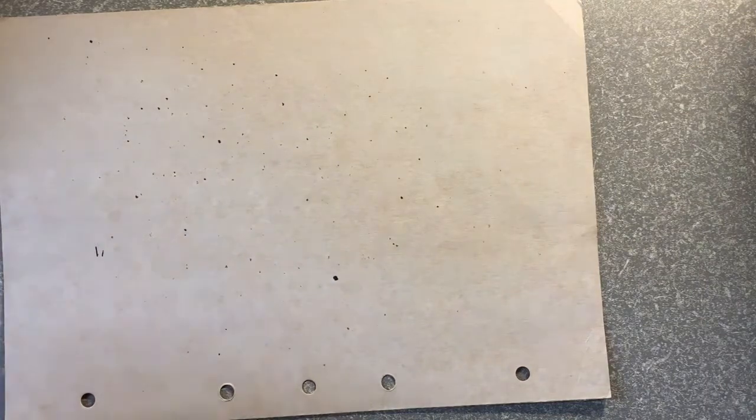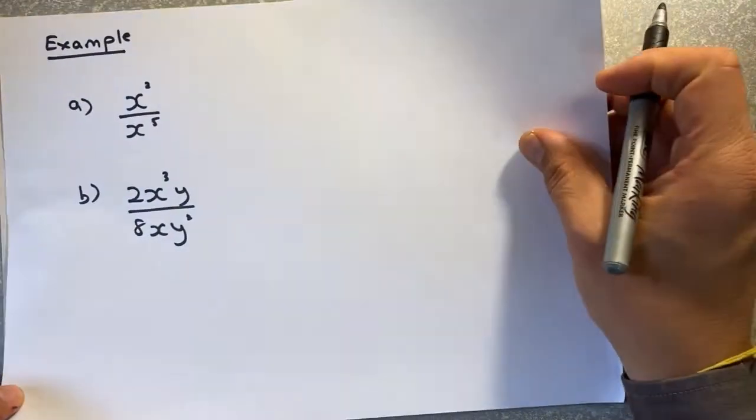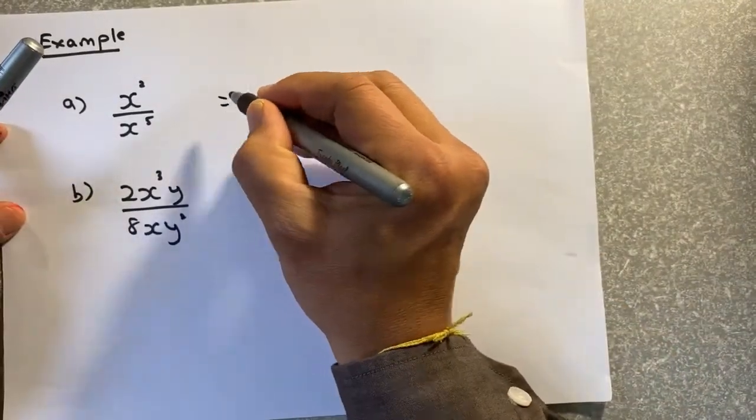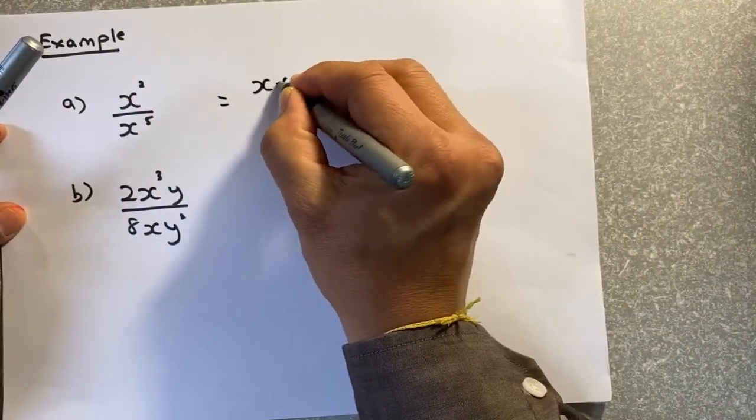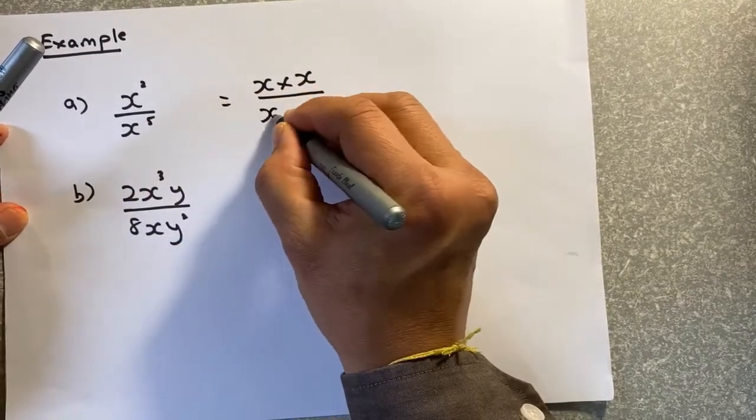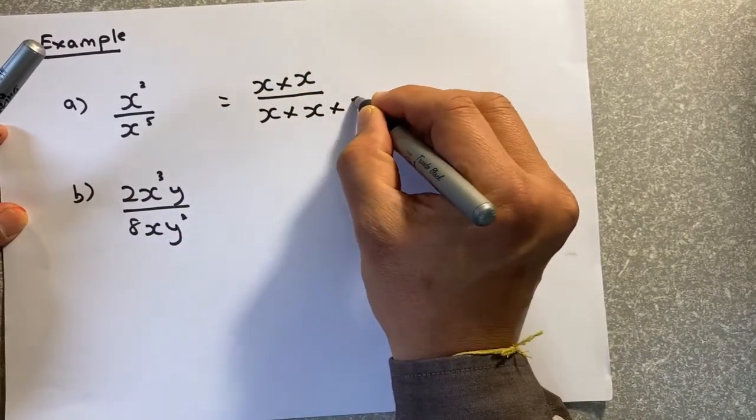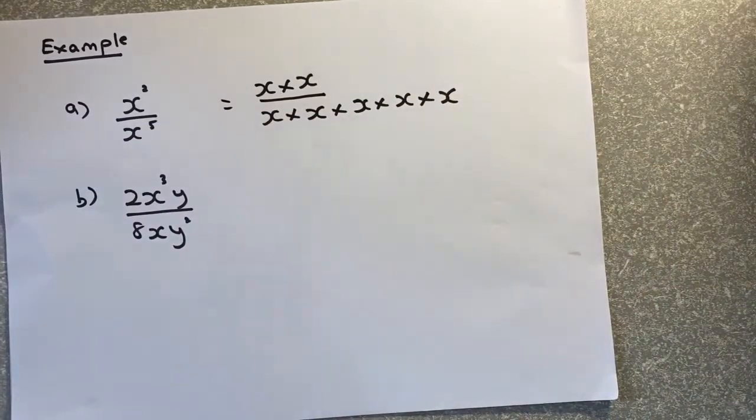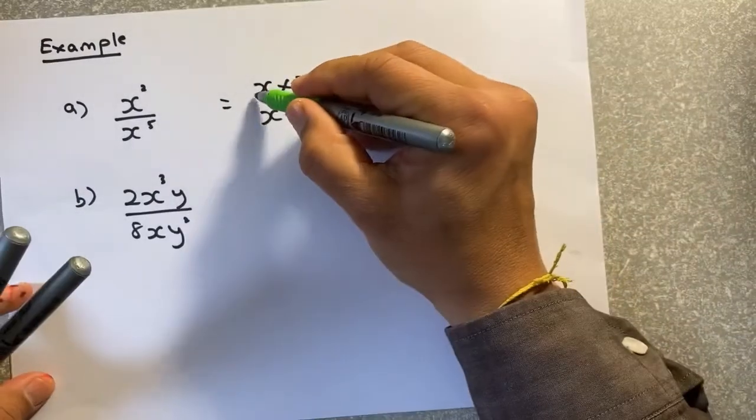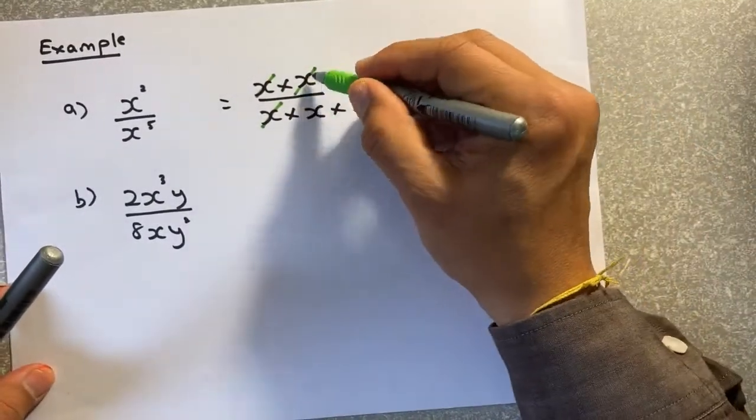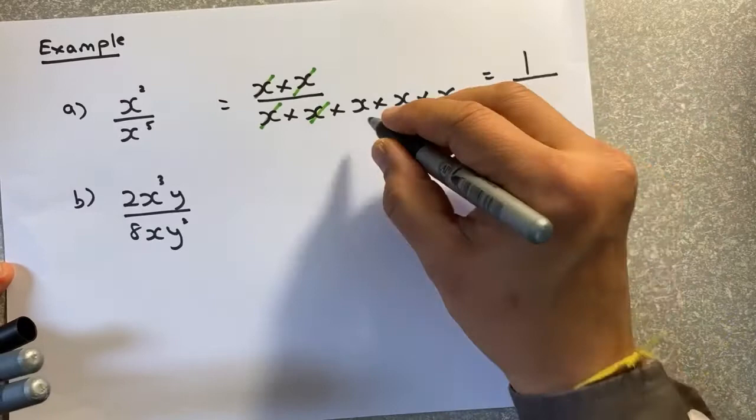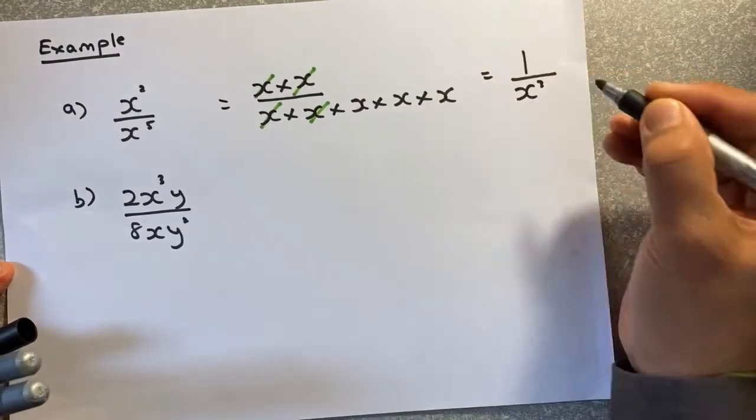Now we shall look at what happens if the denominator has a bigger power. So now, to make it simple, we're just going to multiply them. x squared is actually x times x. And x5 is x times x times x times x times x. So what you do is if there are x and x, you divide any number by the same number, it becomes 1. So you can cancel them out. x and x, you can cancel them out. So technically, you have nothing on top or 1. And at the bottom, there are 3 x's. So x cubed.